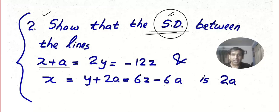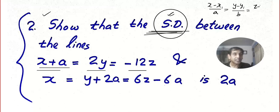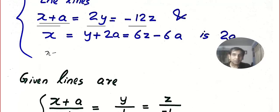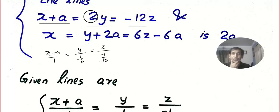The equation I got doesn't look like the standard form. The standard equation is (x − x₁)/a = (y − y₁)/b = (z − z₁)/c. So I'll manipulate it: write x + a divided by 1, equals y divided by 1/2, equals z divided by −1/12. Actually that looks even worse, so let me take the direction ratios as 1, 1/2, −1/12.